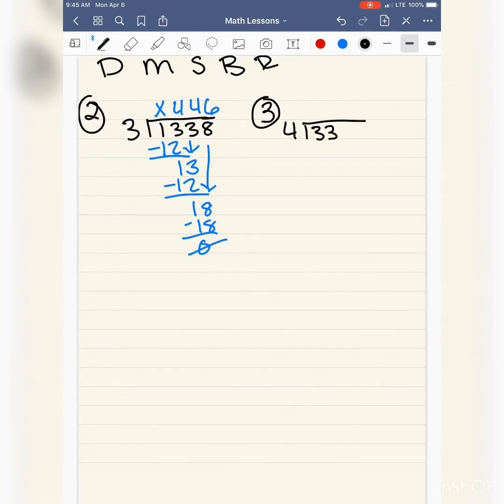Alright, number 3. I have 3,319 divided by 4. 4 will not go into the 3, but it will go into 33. How many times? 8. 8 times 4 is 32. Subtract. I have 1 left over and I bring down my 1. 4 will go into 11 twice. 2 times 4 is 8.